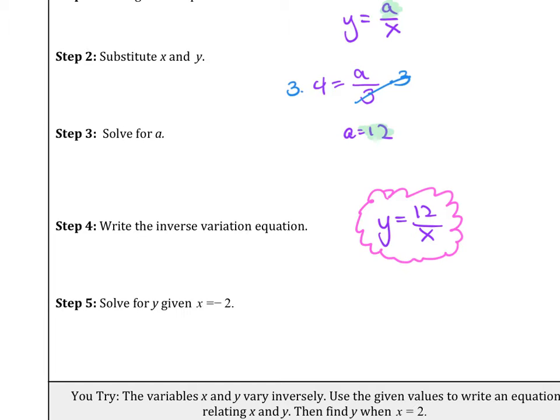So let's plug in x equals negative 2 into our equation, y equals 12 over negative 2. So we find that y equals negative 6. And so that is our solution.